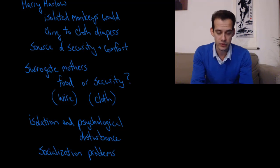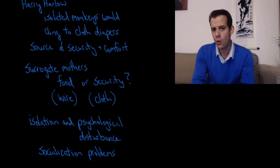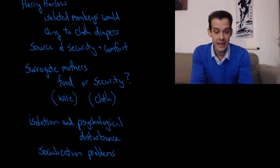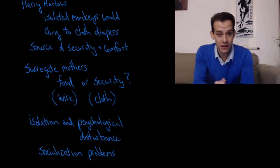He tested this by raising monkeys in isolation and giving them access to a wire mother that provided food, but wasn't particularly comfortable to cling to, or they could choose to spend time on a cloth mother, which didn't provide food but could provide this sense of security. He found that these young monkeys would spend almost all their time clinging to the cloth mother, and they would go to the wire mother only when they needed food, then immediately go back and cling to the fur of this terry cloth mother.